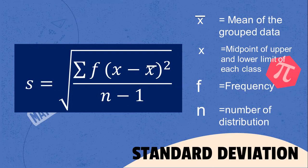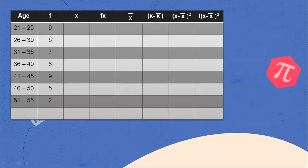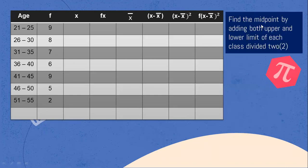Let's now solve for standard deviation. Given age intervals: 21 to 25, 26 to 30, 31 to 35, 36 to 40, 41 to 45, 46 to 50, and 51 to 55, with corresponding frequencies for each class. The first step is to find the midpoint by adding both the upper and lower limit of each class, then dividing by 2. So: 21 plus 25 is 46 divided by 2 equals 23. 26 plus 30 is 56 divided by 2 equals 28.